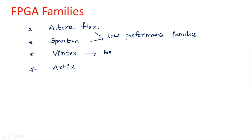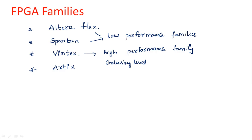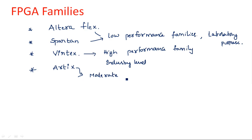Vertex is a high-performance family where we cannot use it for laboratory purpose — we can use it for industry-level usage. Whereas Alteraplex and Spartan are used for laboratory purpose, to check the results, give input and check the output. Artix is neither low performance nor high performance; it is a moderate family where we can use it for laboratories.